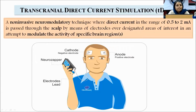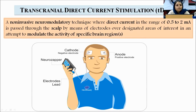Transcranial direct current stimulation is a non-invasive neuromodulatory technique where direct current in the range of 0.5 to 2 milliampere is passed through the scalp by means of electrodes over designated areas of interest, in an attempt to modulate the activity of specific brain regions.